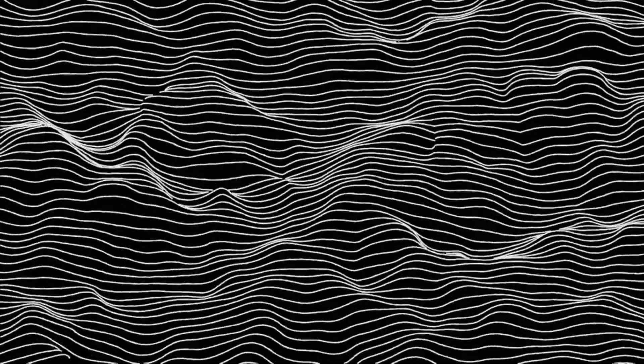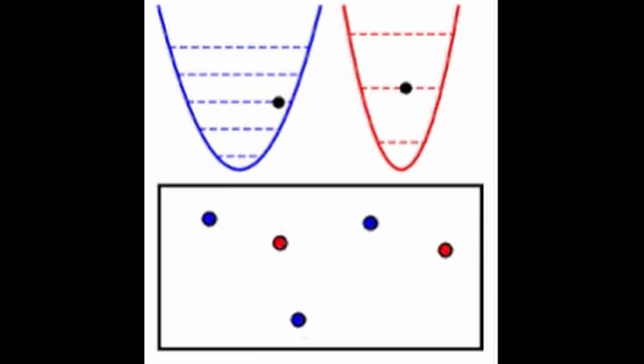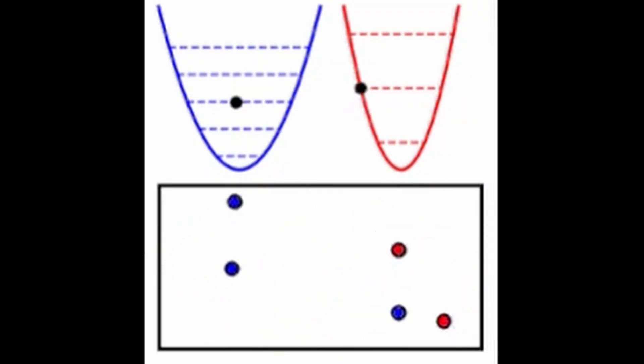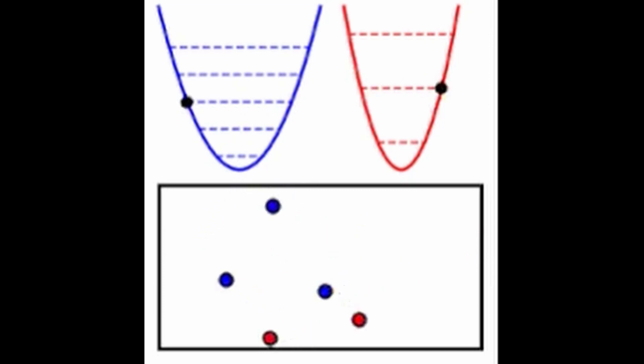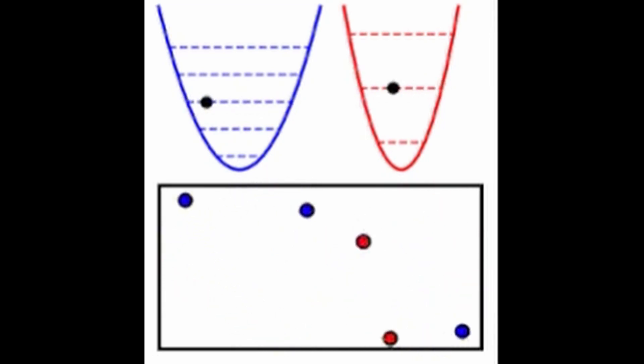These fields are not static, but rather dynamic and constantly changing. According to the theory, particles interact by exchanging other particles, or virtual particles, which are fluctuations in the quantum fields. The concept of virtual particles is central to quantum field theory. These particles are not directly observable, but are instead inferred through their interactions with other particles. They can be thought of as temporary disturbances in the underlying quantum fields that mediate the interactions between particles.